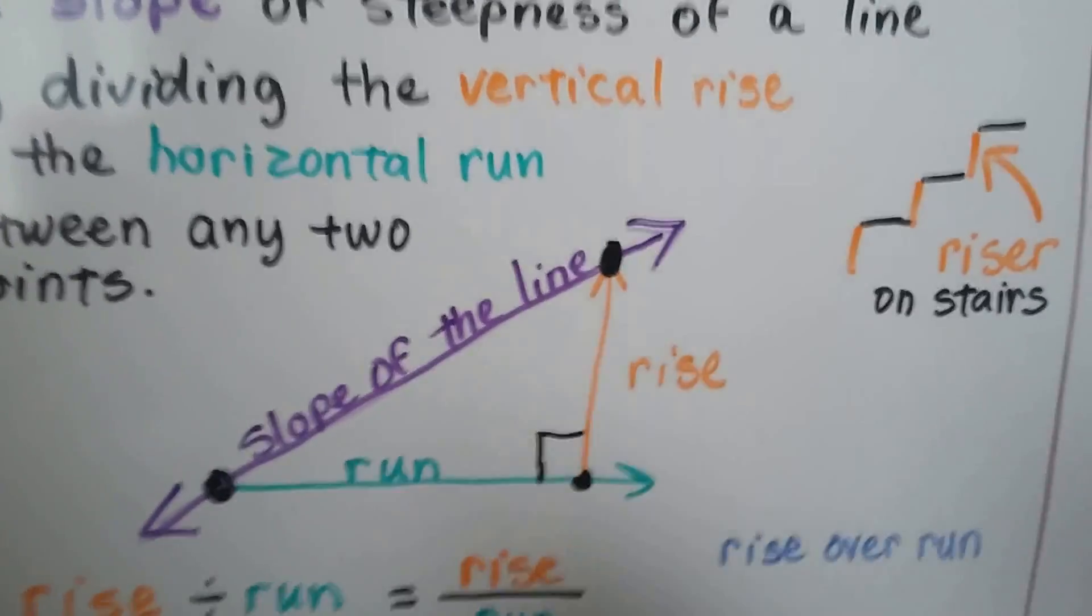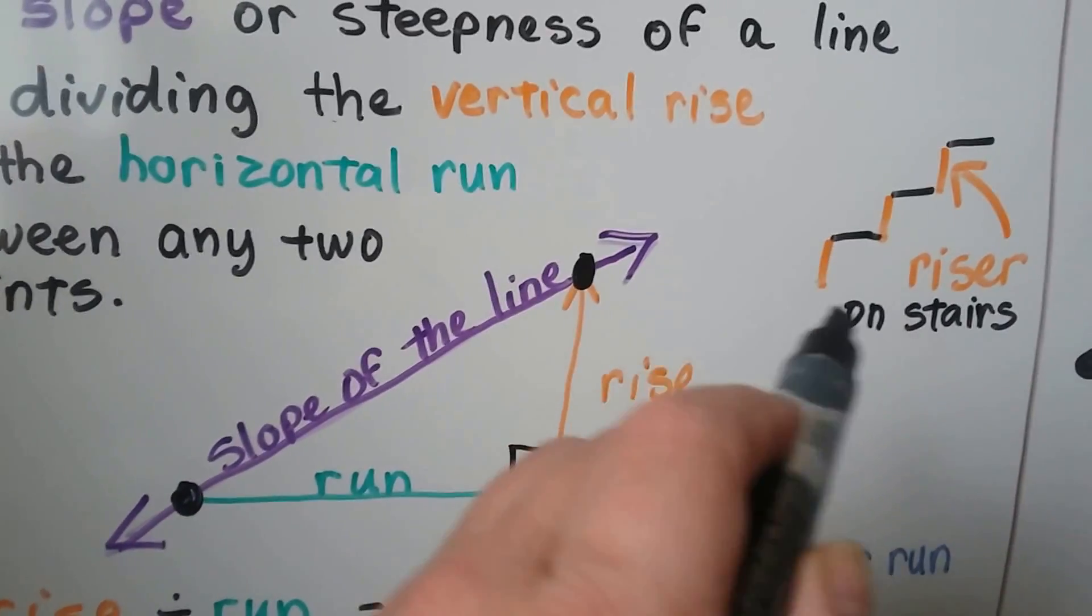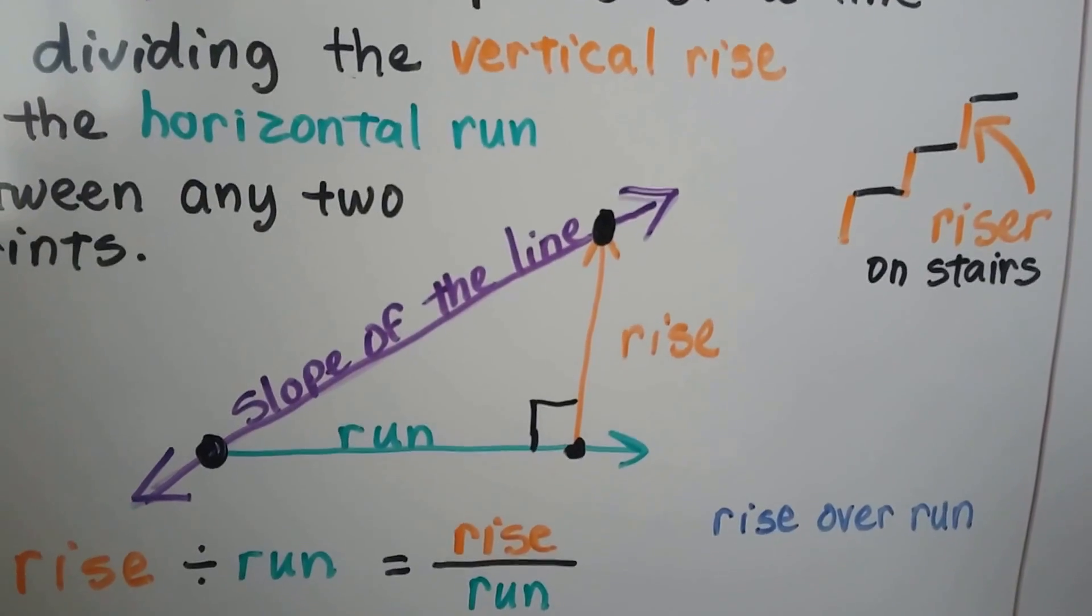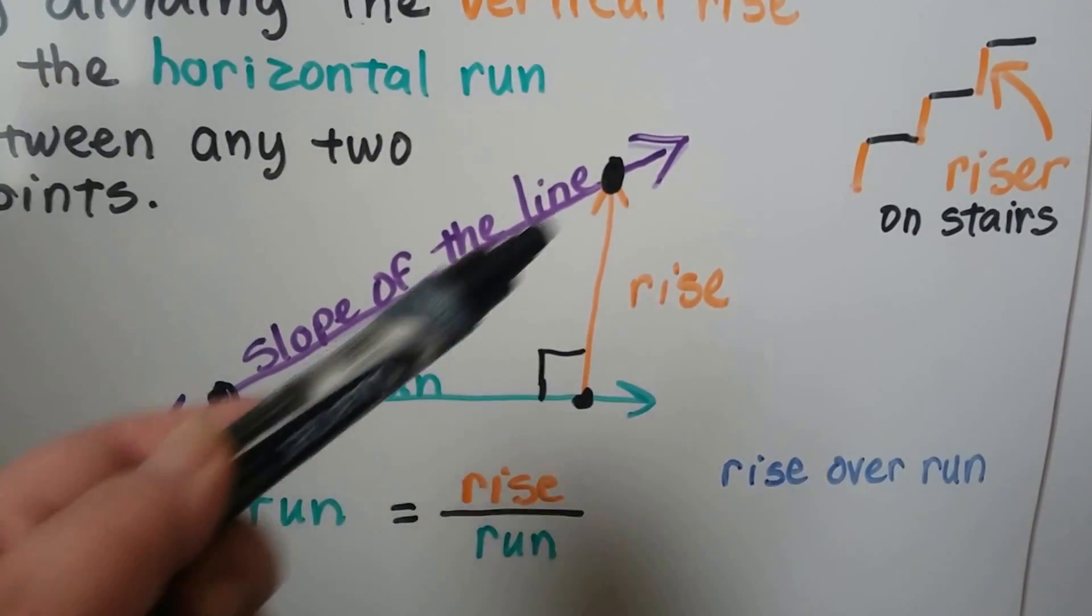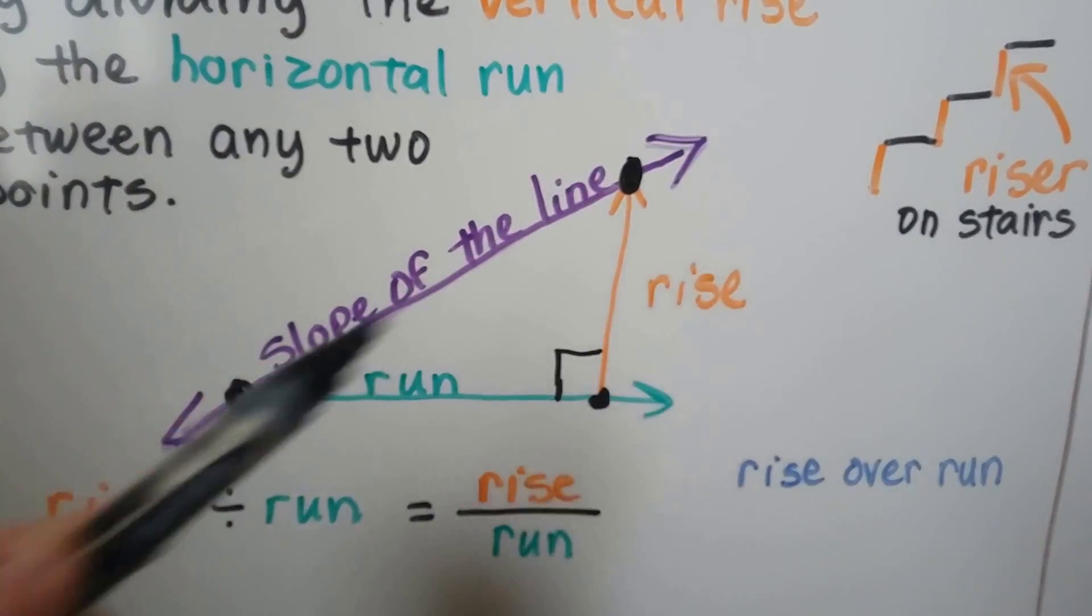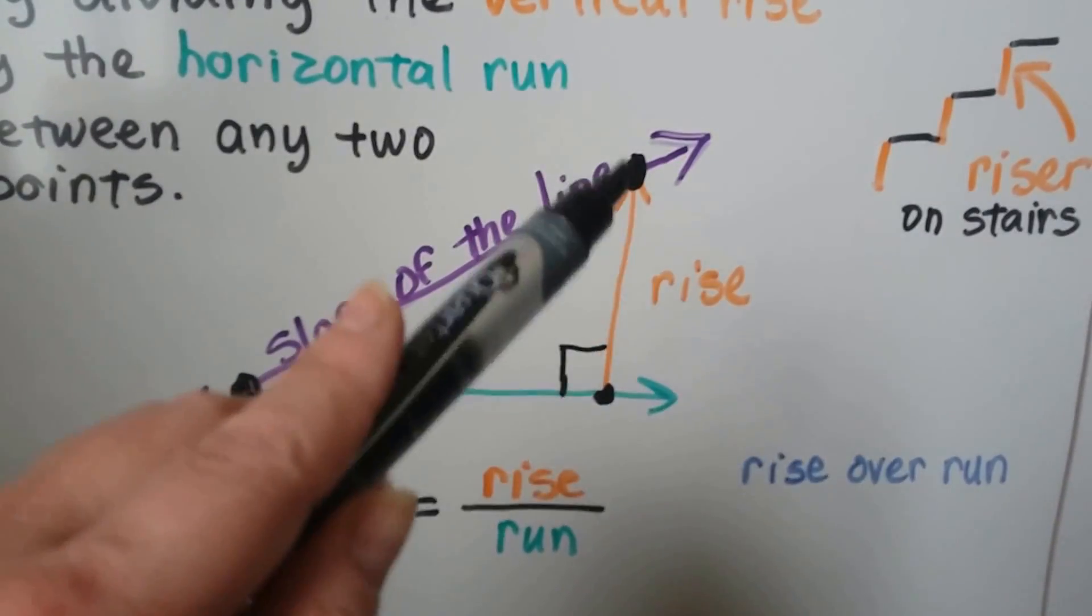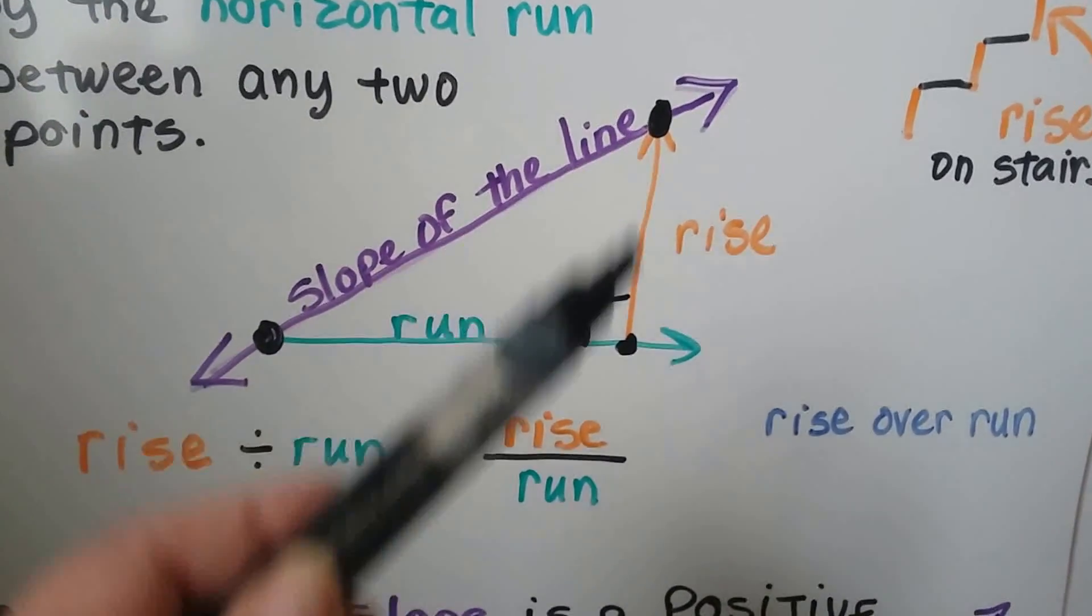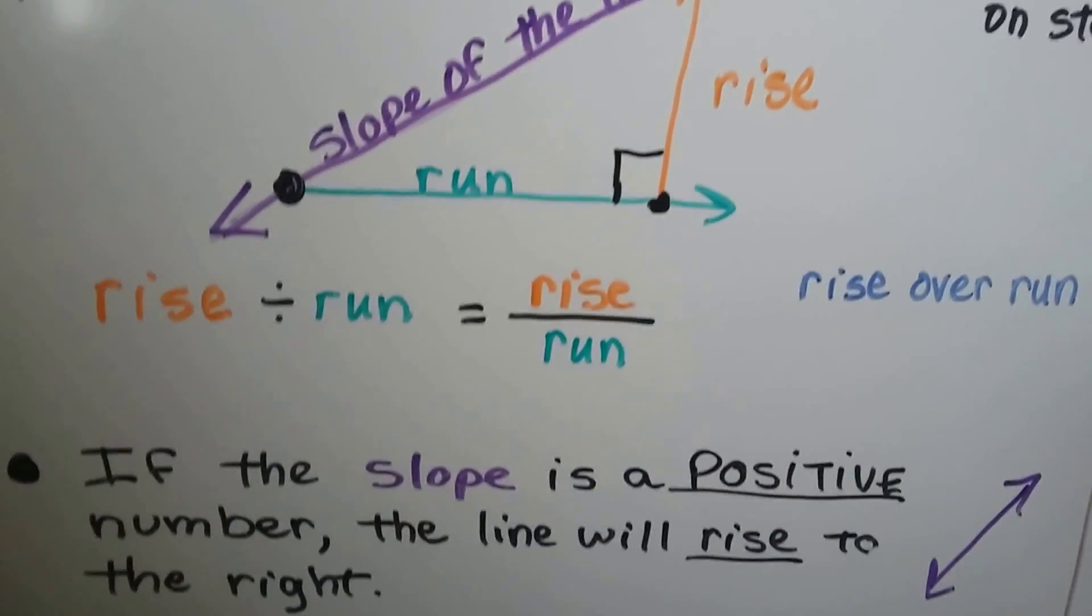Did you know that the part of the stairs right here, each of these parts are called the riser on stairs? Well, to find the slope of a line, we would count the rise and divide it by the run. We make a nice right triangle. It's the rise over the run.